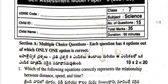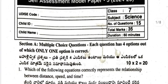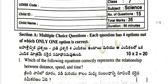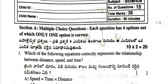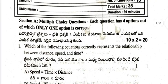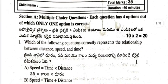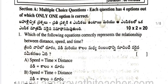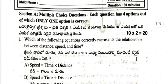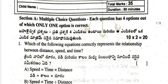Hello, welcome to my YouTube channel. Today's question paper is the self-assessment model paper 3 of 7th class science. Number of questions: 15, marks: 35, duration: 60 minutes. This question paper is prepared and brought before you with answers, so do not skip any part of the paper. See this video till the end — at the end of this question paper, the answers are given.